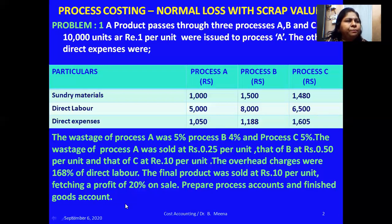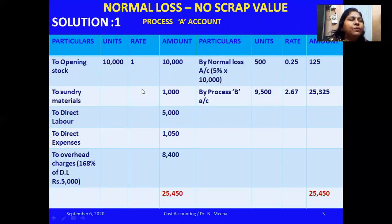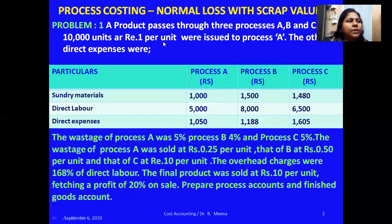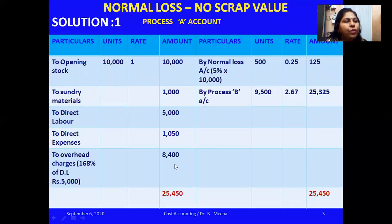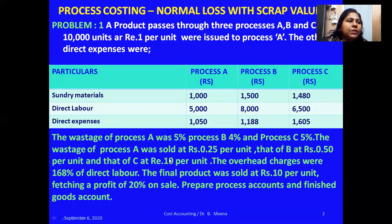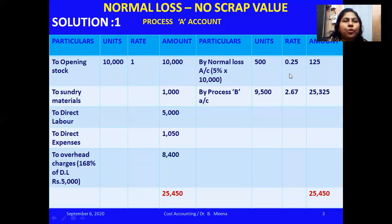Looking at the solution — Process A account. I have three columns on both debit and credit sides: particulars, units, rate, and amount. Opening stock: 10,000 units at rate ₹1, so 10,000 rupees debited. All other expenses including overhead charges — 168% of direct labor of ₹5,000 equals ₹8,400 — are debited. On the credit side, whenever you have wastage with scrap value, write 'by normal loss.' At 5% on 10,000 units, normal loss = 500 units at ₹0.25 per unit.